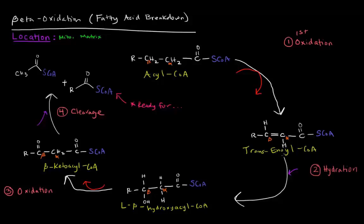Why is this called trans-enoyl-CoA? The 'ene' portion comes from this alkene — this double bond — and it is called trans because the long R-chain is trans to the substituent with the CoA on it. This acyl-CoA is oxidized to trans-enoyl-CoA, so something else must have been reduced. In fact, we're taking an FAD and turning it into FADH2, which can yield us energy.